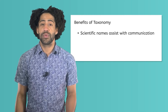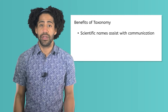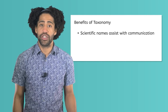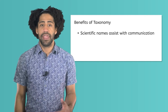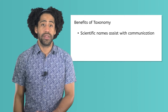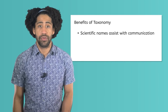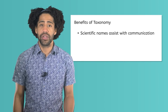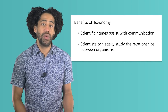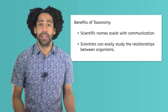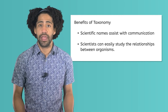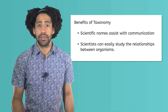Taxonomy assists with communication, because no matter which language a scientist speaks, the name Canis lupus will always mean gray wolf. Additionally, scientists can easily study the relationships between organisms by looking at which levels they have in common and which levels they don't.